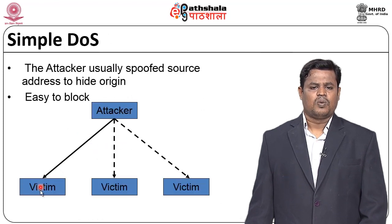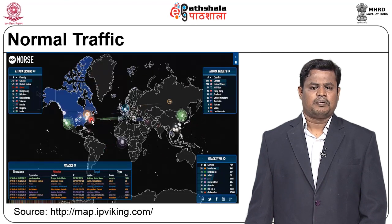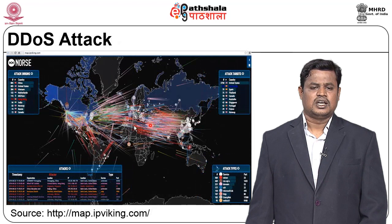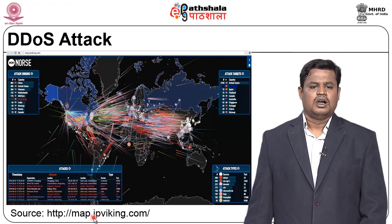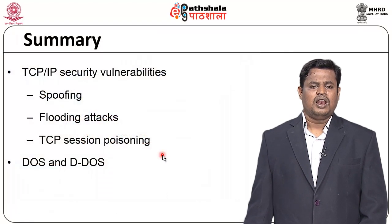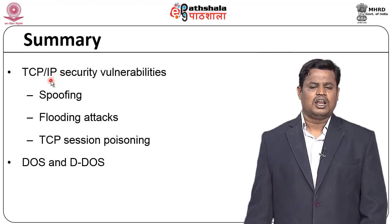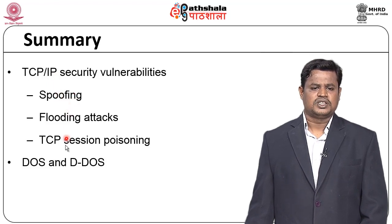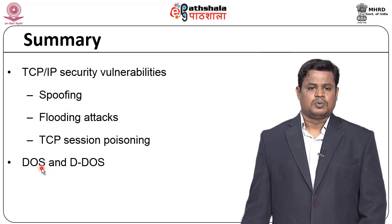A simple DoS scenario has one attacker creating traffic against a victim, while a distributed denial of service (DDoS) attack involves an enormous amount of packets that the server is unable to handle, visible in real time via websites like IPviking.com. Overall, we now understand network layer vulnerabilities including spoofing, flooding, session hijacking, denial of service, and distributed denial of service with respect to the transport layer network model.